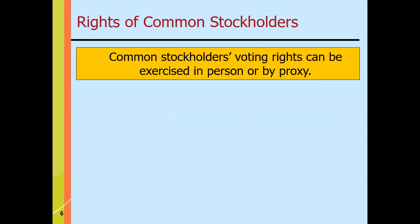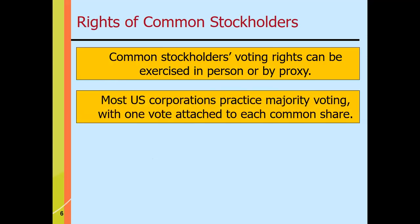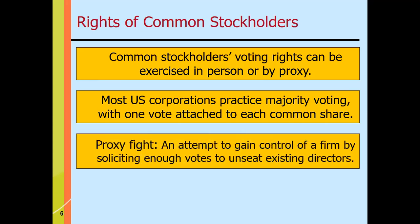Shareholders' rights can be exercised in person or by proxy. Most U.S. corporations practice majority voting with one vote per common share. However, in the Philippines, cumulative voting is the norm — for every share held, a person can vote for a number of candidates up to the number of board seats. For example, if there are five board members, each share carries five votes, which can be allocated freely among candidates.